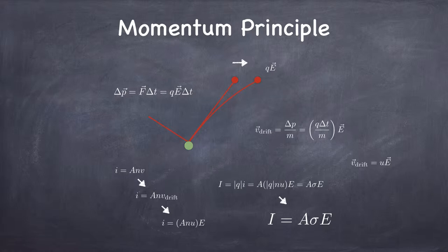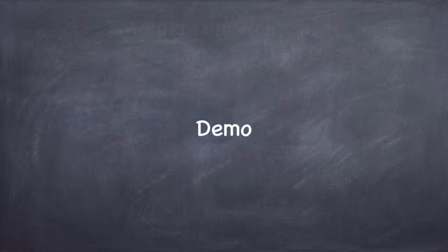The point is the conductivity is a property of the material. The electric field and the area are circumstantial — they're determined by outside influences, like how big you made the wire and how you turned up the knob on the power supply. Let's go back now and look at the demo again with some of that language in place.